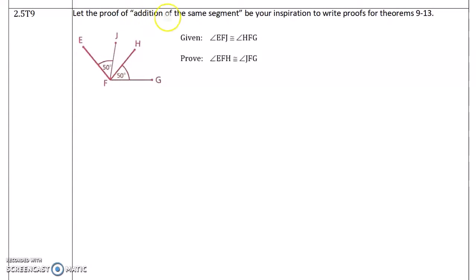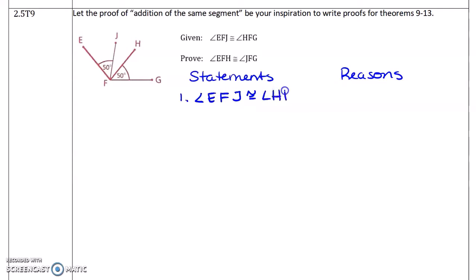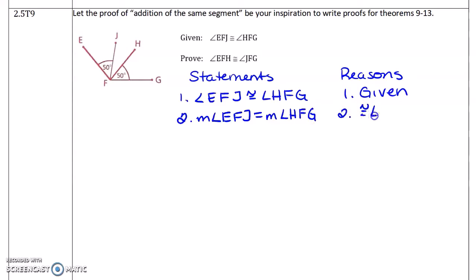Let's use the proof of addition of the same segment as our model or inspiration for this next proof. We start out with statements and reasons, and we're given that angle EFJ is congruent to angle HFG. So then we can say the measure of angle EFJ is equal to the measure of angle HFG, because if two angles are congruent, then they have equal measure.